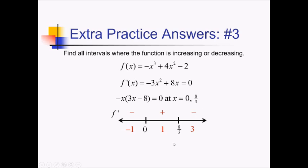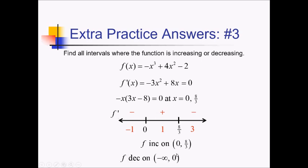Taking a look at our intervals: since f prime is positive in the middle here, we can say f is increasing from 0 to 8 thirds. And then since f prime is negative everywhere else, we can say that f is decreasing from negative infinity to 0, union 8 thirds to positive infinity.